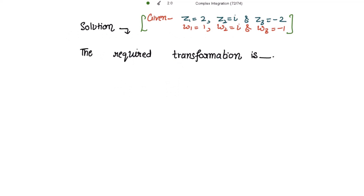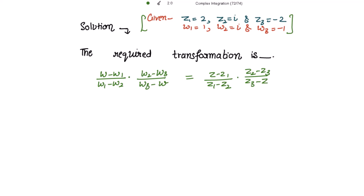Now for the solution: z1 = 2, z2 = i, z3 = -2, w1 = 1, w2 = i, w3 = -1. The required transformation is: (w - w1)/(w1 - w2) · (w2 - w3)/(w3 - w) = (z - z1)/(z1 - z2) · (z2 - z3)/(z3 - z).